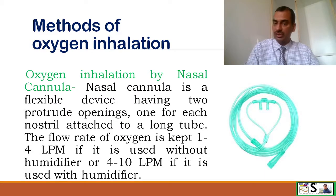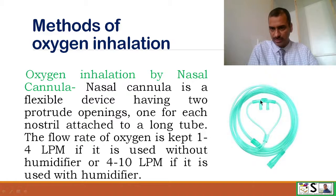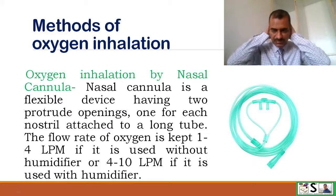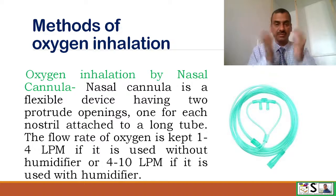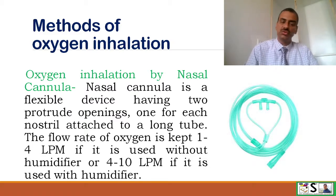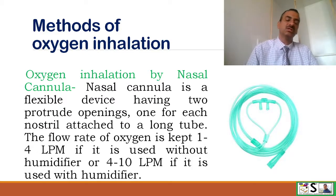Oxygen inhalation by nasal cannula. Nasal cannula is a flexible device having two prong openings — one for each nostril. It encircles around the mouth and can be secured with tape. It is attached with a long tube. The flow rate of oxygen is kept at 1 to 4 lpm without a humidifier, or 4 to 10 lpm if used with a humidifier.